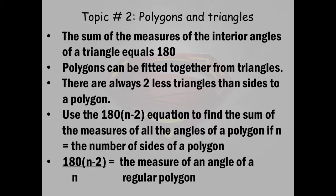Polygons can be fitted together to form triangles and there are always two less triangles than sides to a polygon. Use the 180(n-2) equation to find the sum of the measures of all angles of a polygon if n equals the number of sides. And if it is a regular polygon, meaning all sides are the same, all angles are the same, you can use 180(n-2) all over n, where n is the number of sides of a polygon.